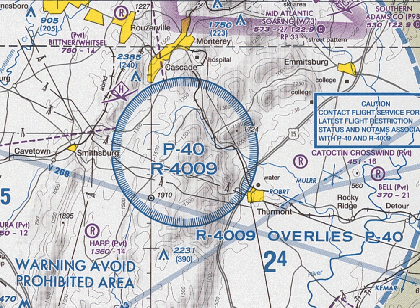According to the U.S. Federal Aviation Administration (FAA), prohibited areas contain airspace of defined dimensions identified by an area on the surface of the earth within which the flight of aircraft is prohibited. Such areas are established for security or other reasons associated with the national welfare. These areas are published in the Federal Register and are depicted on aeronautical charts.